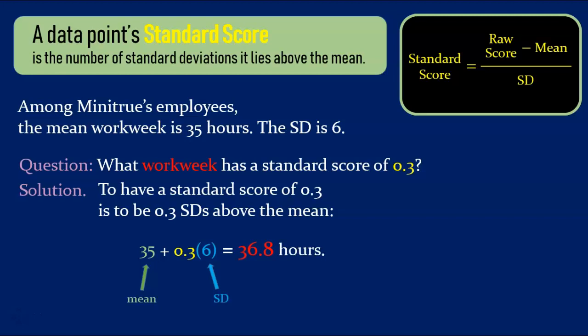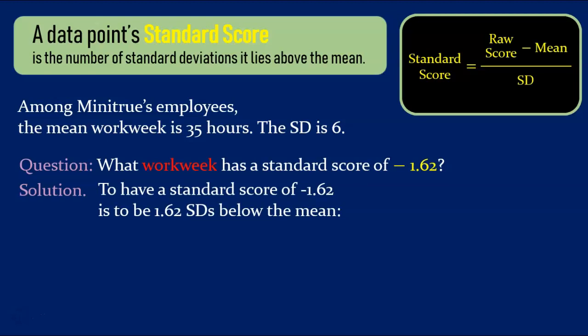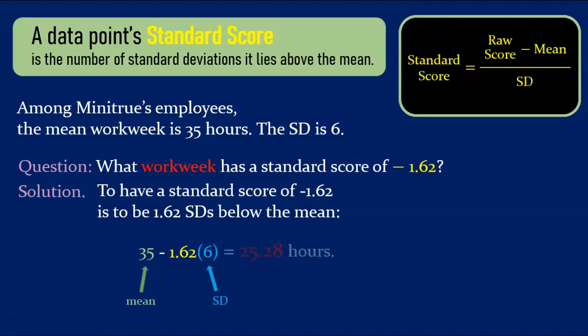Naturally, the same sort of computation will work for negative standard scores. For example, what workweek has a standard score of minus 1.62? To have a standard score of minus 1.62 is to be 1.62 standard deviations below the mean. So, we start at the mean, subtract off 1.62 standard deviations, that is, 1.62 copies of 6, and by doing the arithmetic, we discover that a 25.28-hour workweek has the standard score in question.